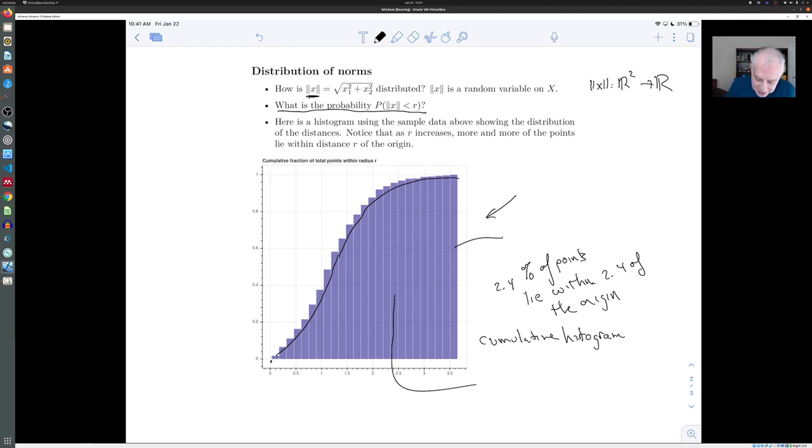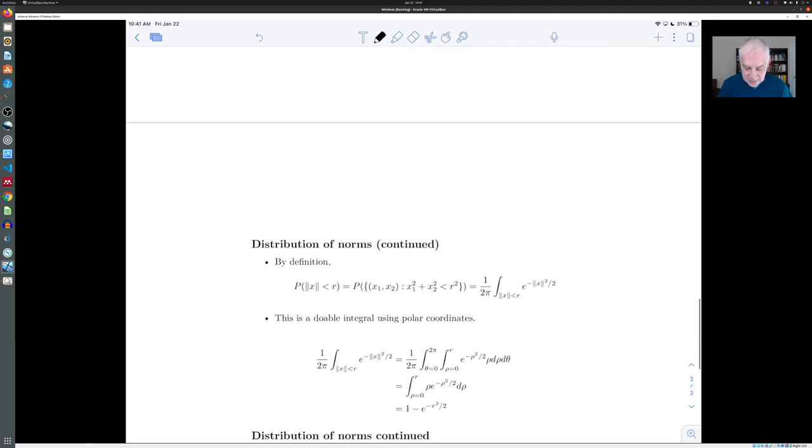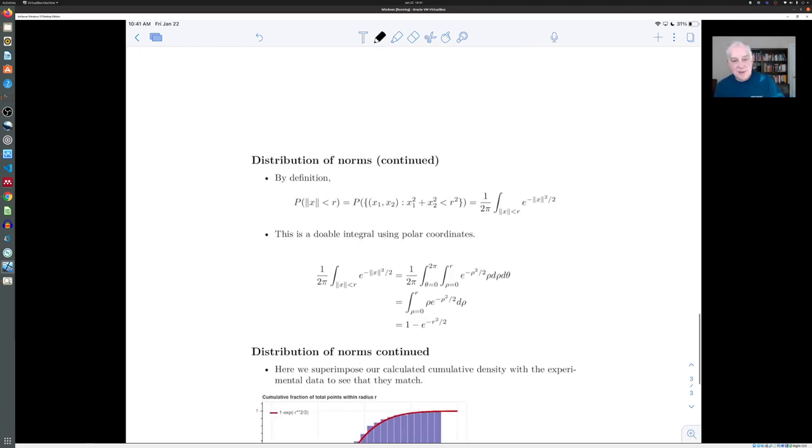And to ask about the probability that X is less than R is more or less to ask, can we explain this diagram? Because we're asking if we knew that the probability that the absolute value of X is less than R was say 50%, that should mean that half of the points that we've chosen lie within that distance of the origin.